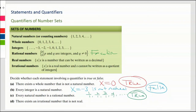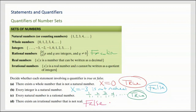The last question: 'There exists an irrational number that is not real.' The definition of real numbers is the rational numbers combined with the irrational numbers. So there does not exist an irrational number that is not real — it's impossible. An irrational number is a real number. This statement is false — you can't find one. A number that's not real is what we call an imaginary number, and we won't be talking about those in this class.